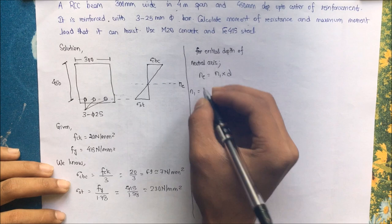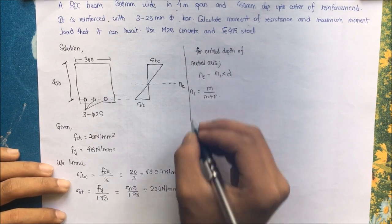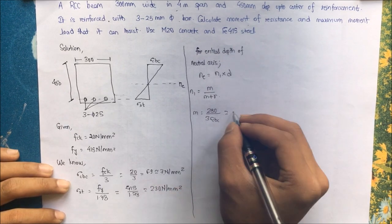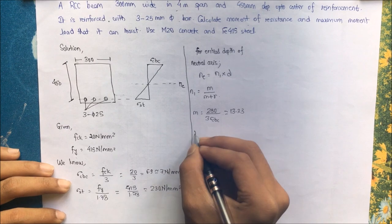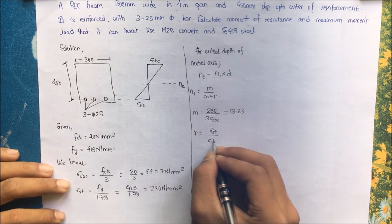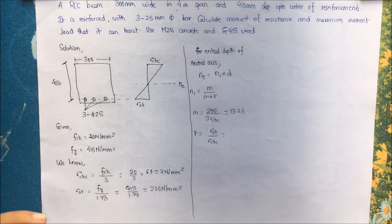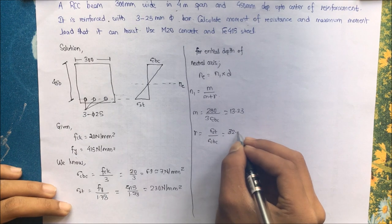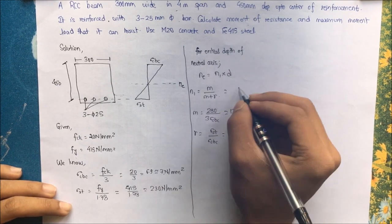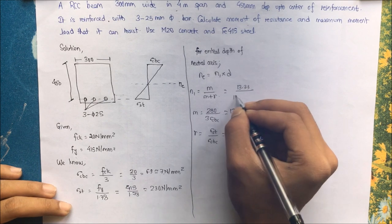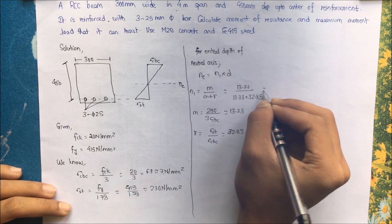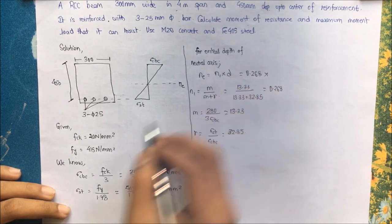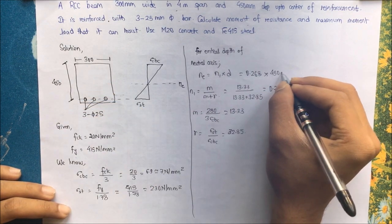For which we have formula 280 by 3 sigma cbc, substituting as 7 we get this value as 13.33. Similarly, R is equal to sigma st by sigma cbc. I have already discussed about this in the introduction part, you can check there. We have this as 32.85. Okay, substitute the value of sigma st and sigma cbc.